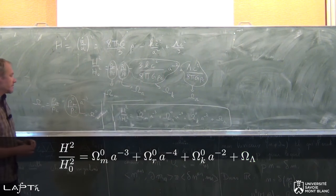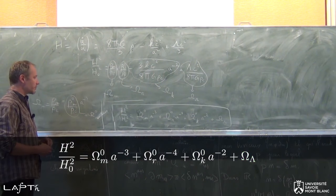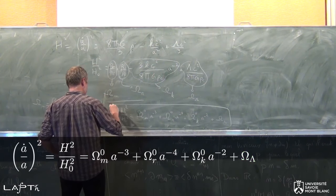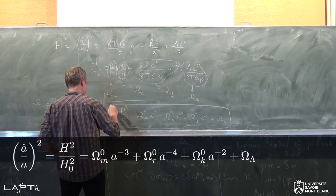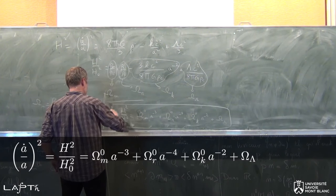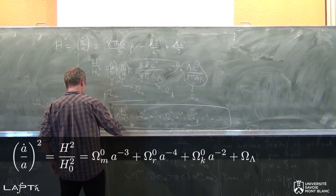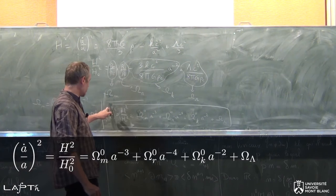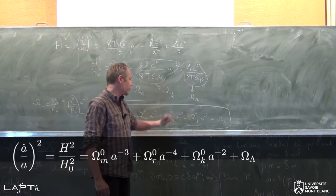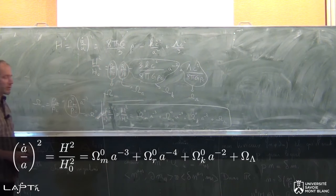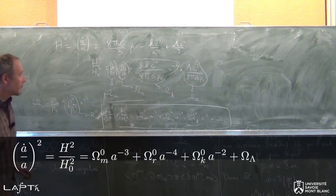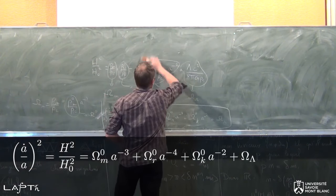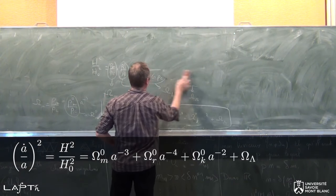Ce qui va nous intéresser, c'est de résoudre cette équation différentielle. Si vous voulez vraiment le faire apparaître comme équation différentielle, on la met sous la forme A point sur A au carré, avec A sur H₀². On a ici un terme de dérivée temporelle de A qui dépend de A. On peut aussi l'écrire sous une forme différente en multipliant tout ça par A² et en prenant la racine carrée pour faire apparaître vraiment A point.